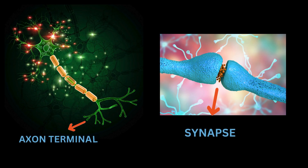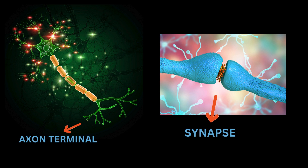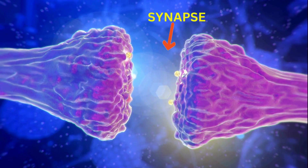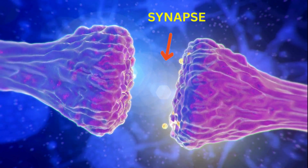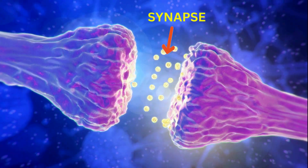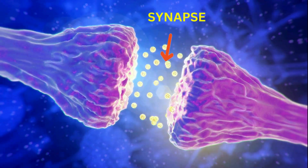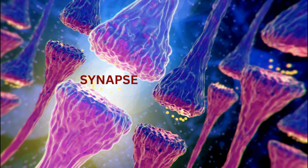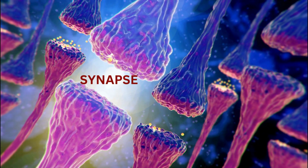Axon terminals, or axon endings, are the branched ends of the axon that form synapses with other cells, allowing for the transmission of signals. A synapse is the junction between the axon terminal of one neuron and the dendrites or cell body of another, where neurotransmitters are released to transmit signals. Neurons communicate with each other through synapses.